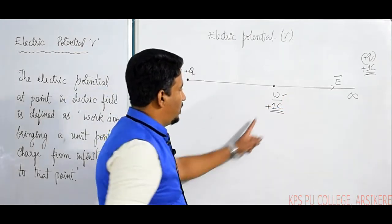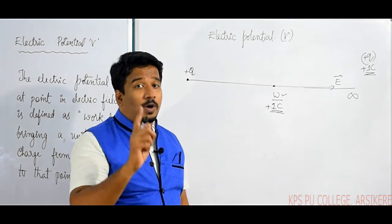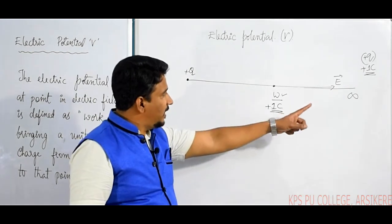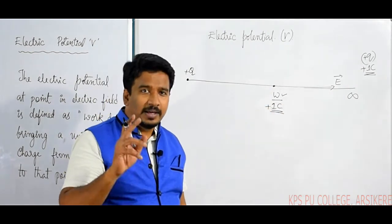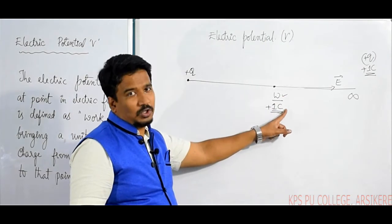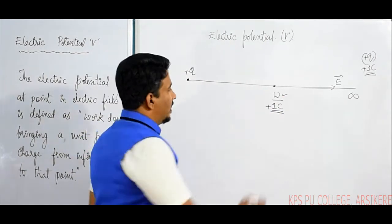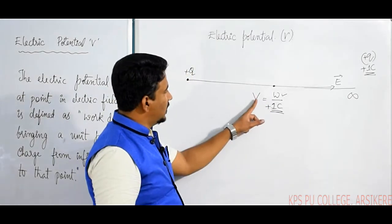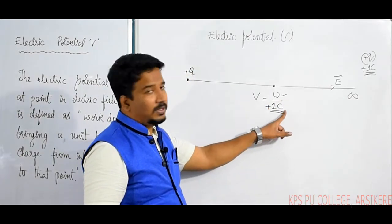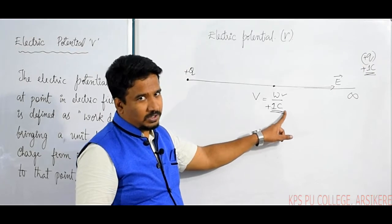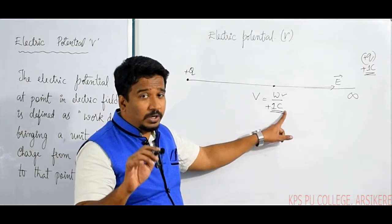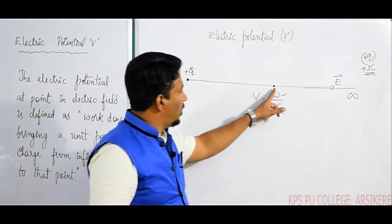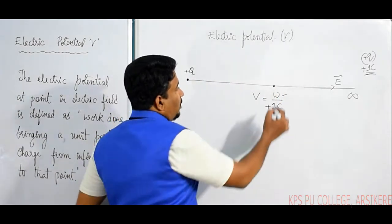We are dealing with a unit positive charge of plus one coulomb, brought from infinity to a particular point. Electric Potential is defined as the work done per unit positive charge in bringing it from infinity to that particular point. Am I clear with this concept?